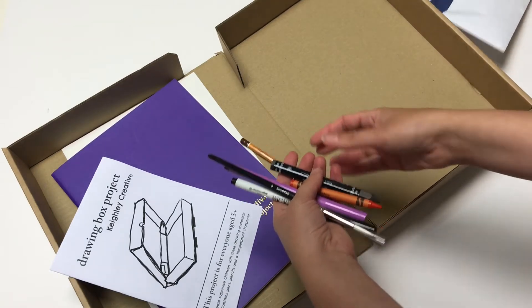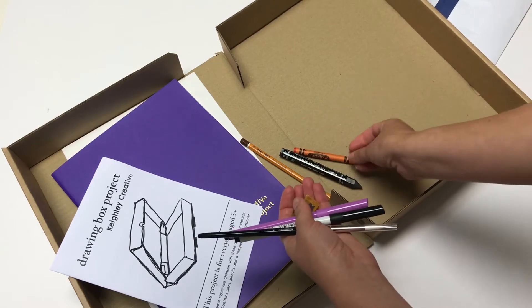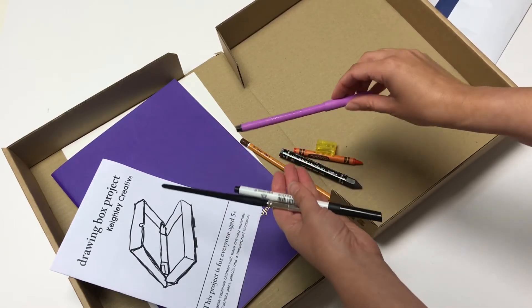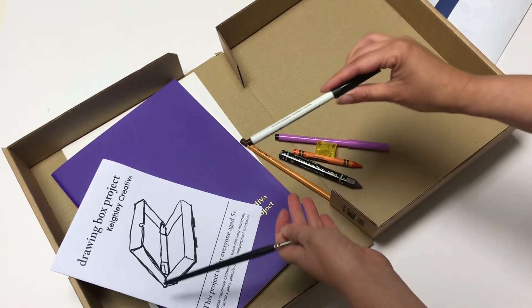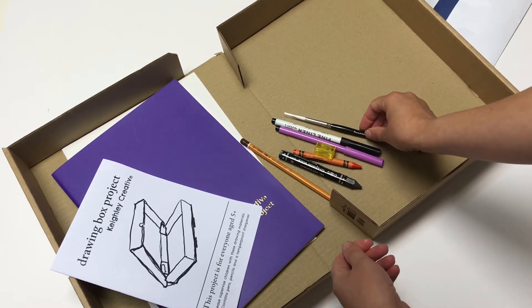We've got a pencil, a graphite, a crayon, my favorite, a pencil sharpener, felt tip, a drawing pen, and a paintbrush.